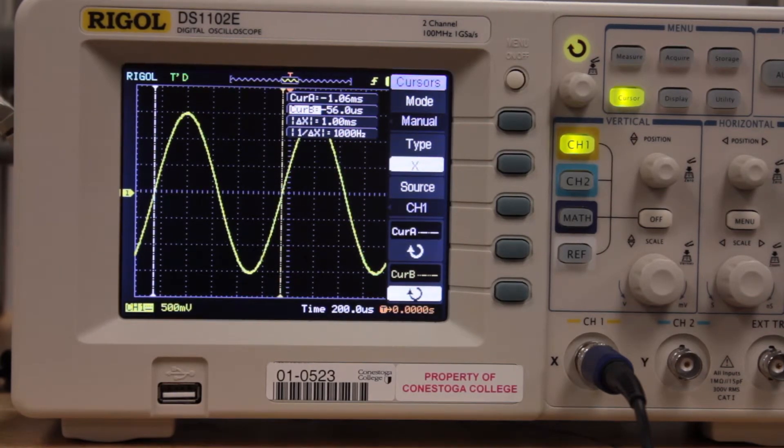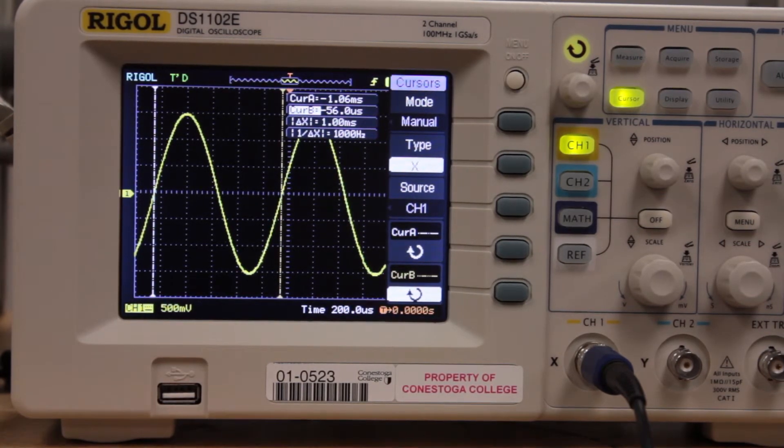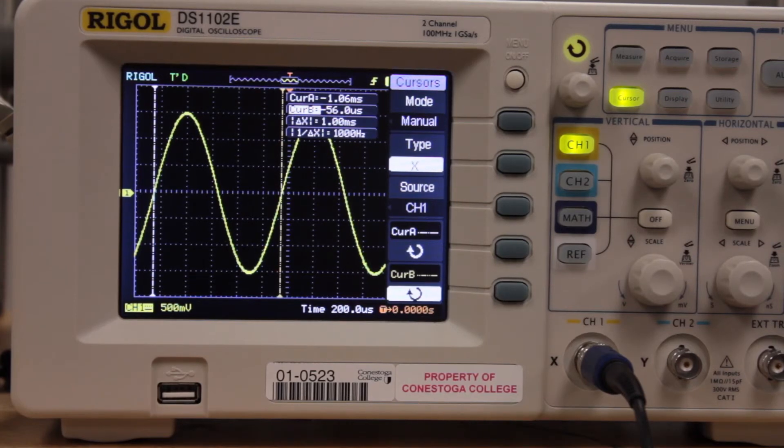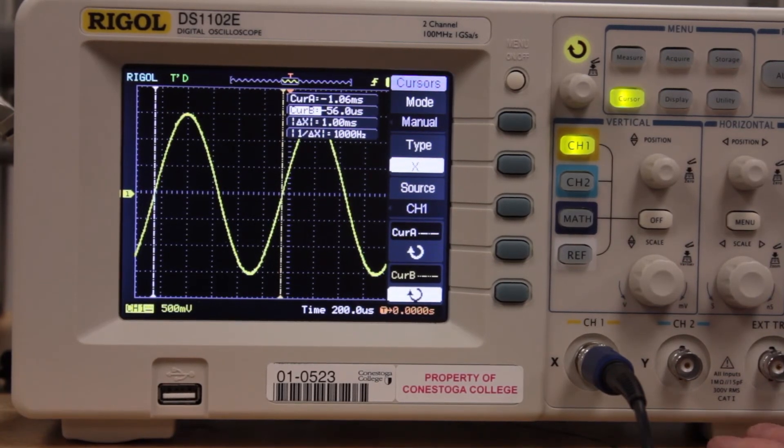So when in doubt, use your brain and remember that 1 over the period is equal to the frequency. Thank you.